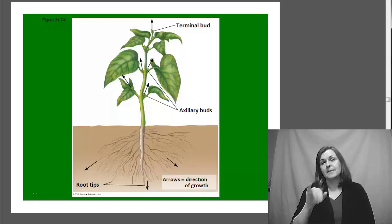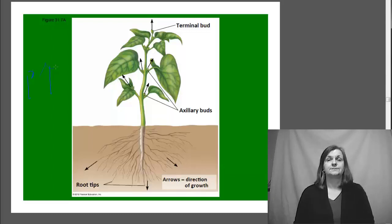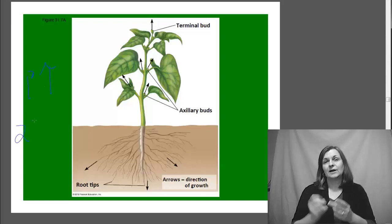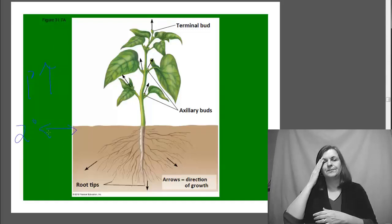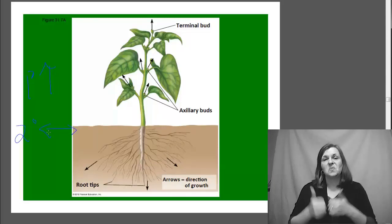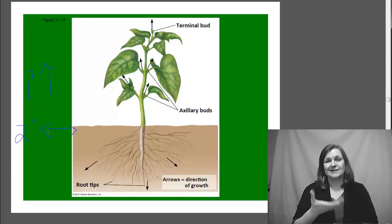Primary growth is growth taller. Secondary growth is growth wider. And we'll look at secondary growth in a minute. But regardless of the type of growth, we need something known as a meristem.